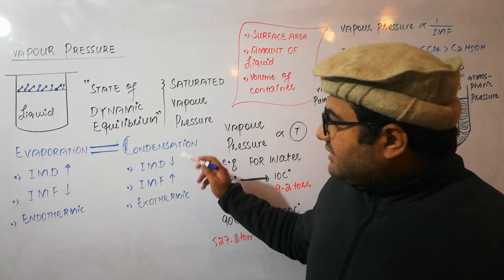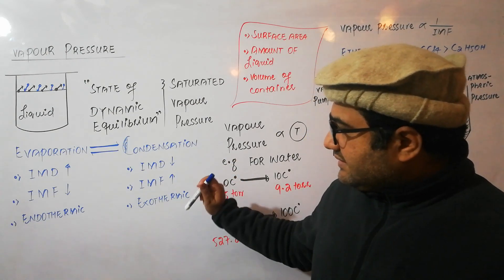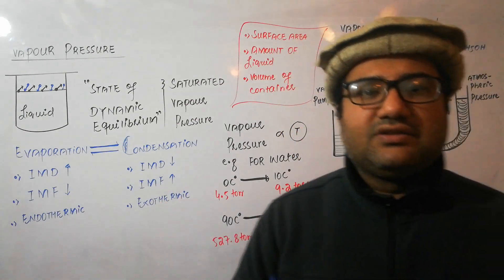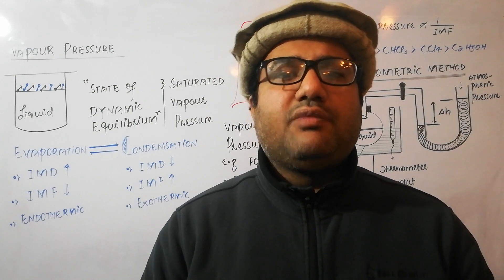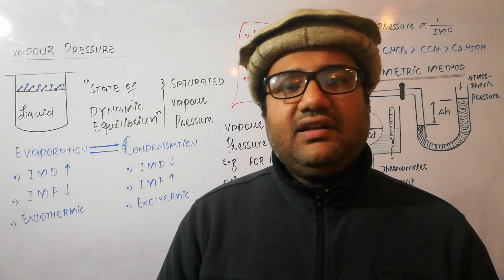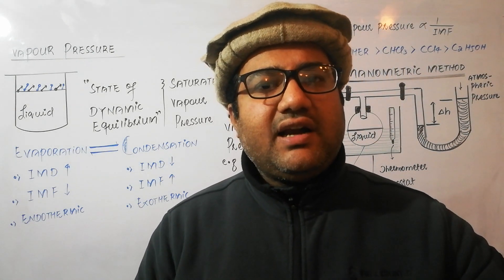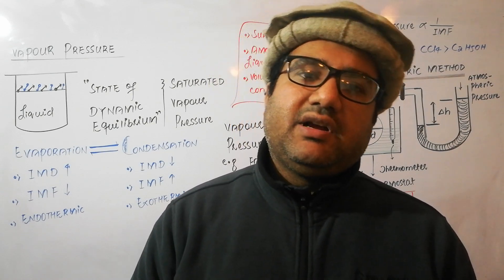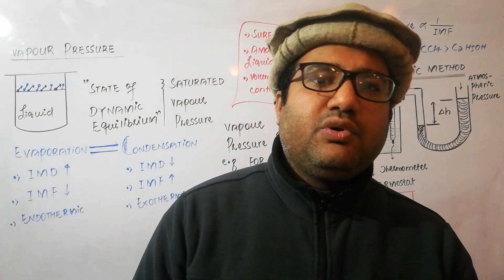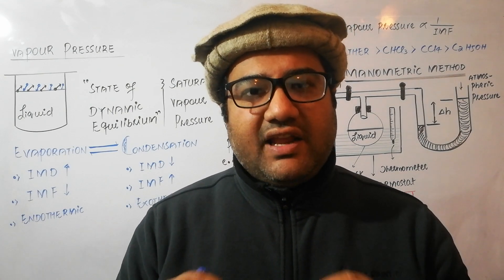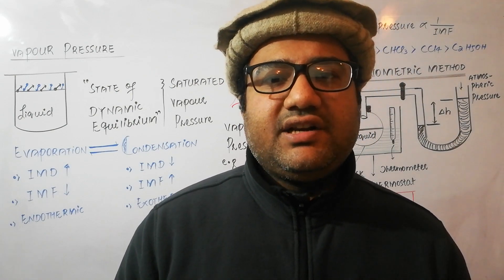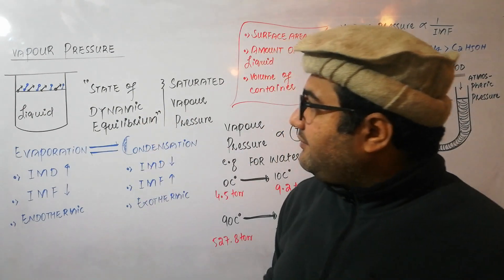Condensation is a process in which intermolecular distance decreases, intermolecular forces increase in strength, and it is an exothermic process. Both are exactly opposite processes of each other. A stage is reached when the number of molecules leaving the liquid and the number entering the liquid become equal — the speed of evaporation and condensation both become equal. This is called the state of dynamic equilibrium.